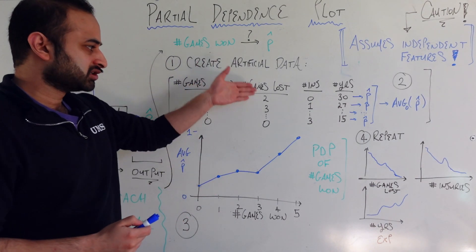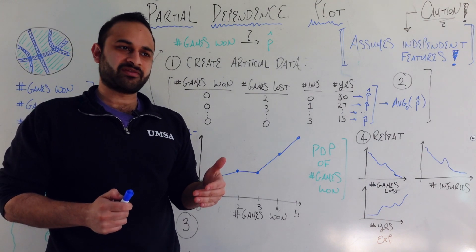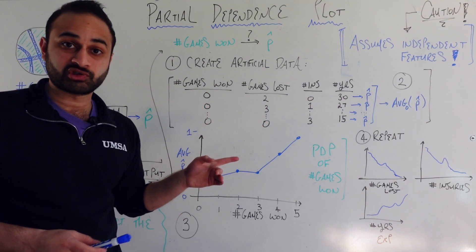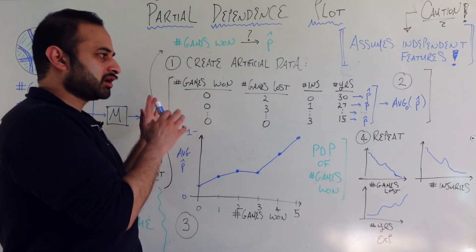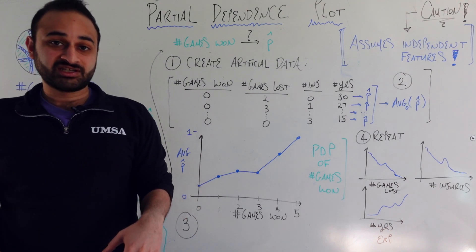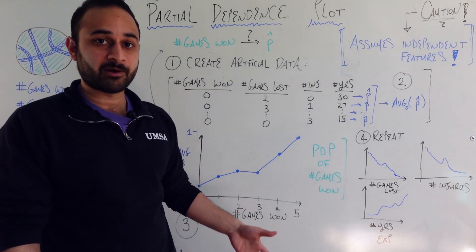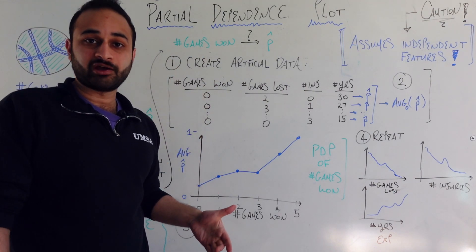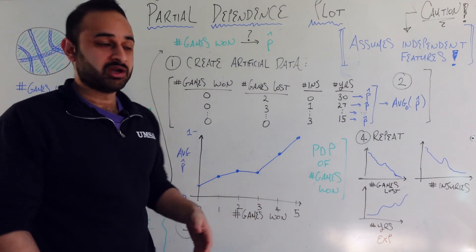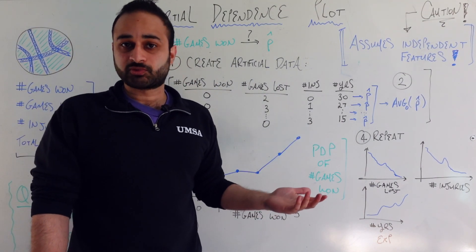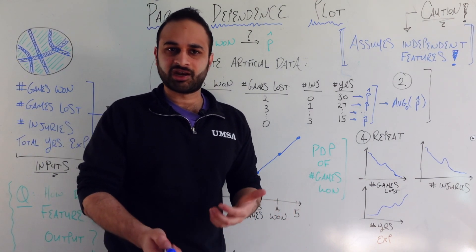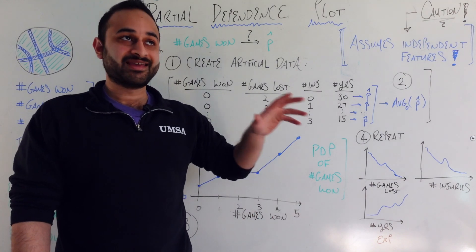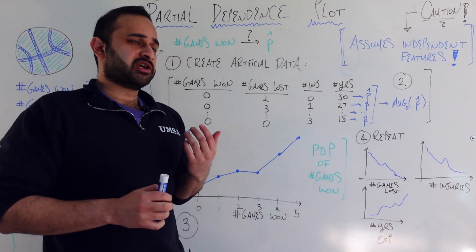By setting the games-won column to zero while leaving games-lost unchanged, we artificially create a dataset that probably can't exist in the real world — one team's combined total would suggest they've played two games, another three, another zero. This inconsistency arises because partial dependence analysis heavily relies on the assumption that features are independent — that artificially setting one feature doesn't create impossibilities based on other features. In any real-world data science project, many features will be correlated, which is something to keep in mind.